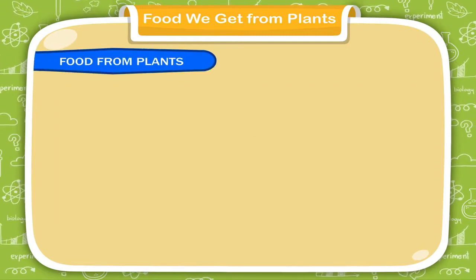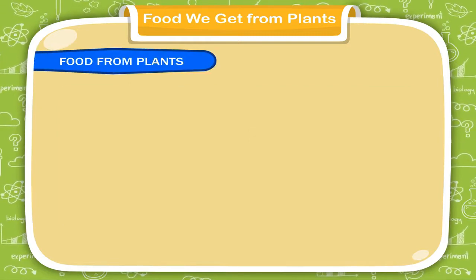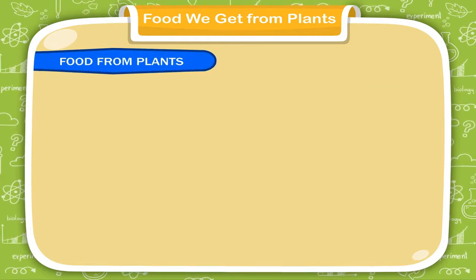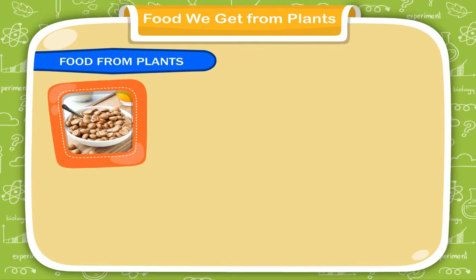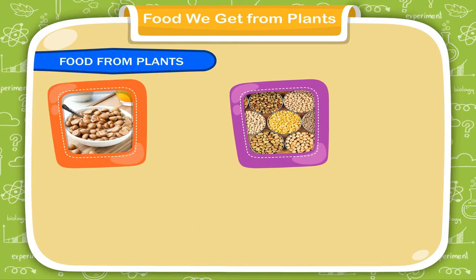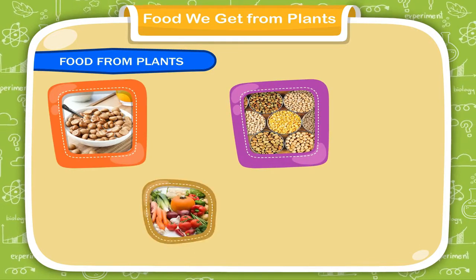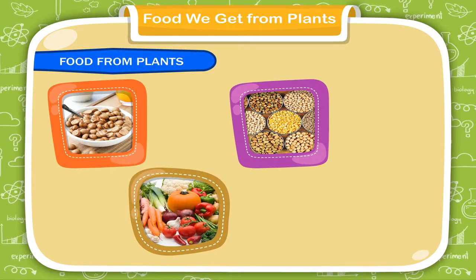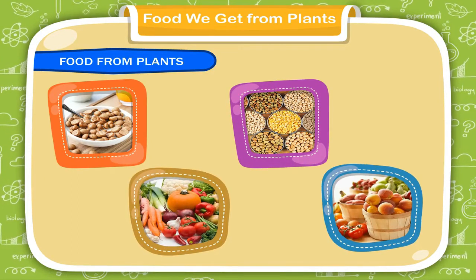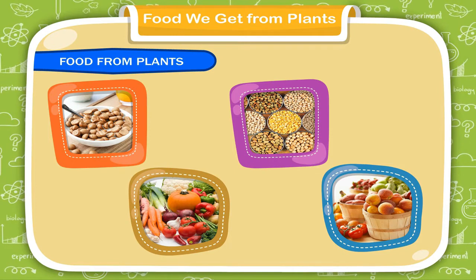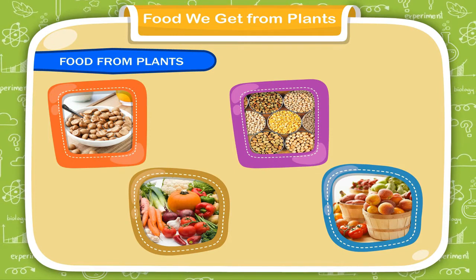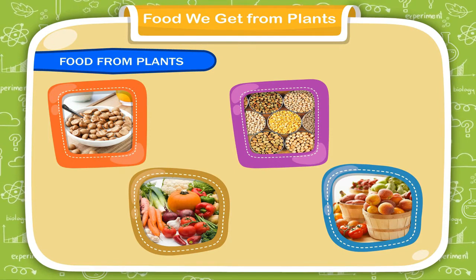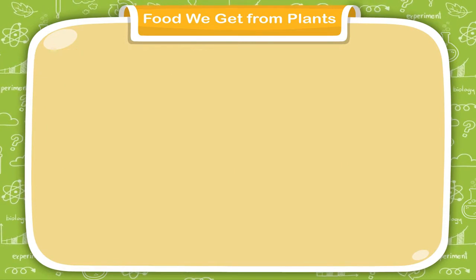Food from plants. Plants give us cereals, pulses, vegetables and fruits to eat. We also eat different parts of plants.